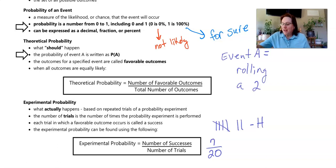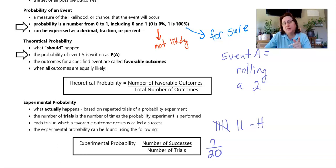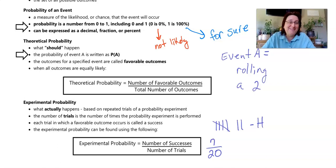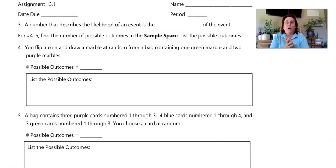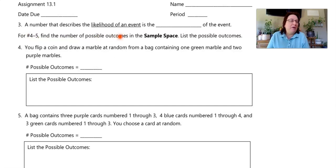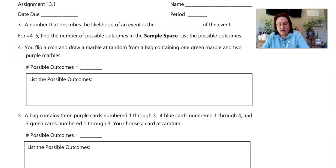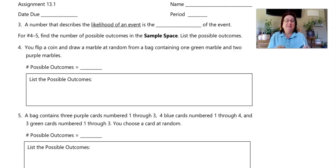Now I'm going to work through some problems with you — I'll do three of them, and then you'll get a better hang of all of this. Let's start with question number four. The instructions say: find the number of possible outcomes in the sample space and list the possible outcomes. Question four says: you flip a coin and draw a marble at random from a bag containing one green marble and two purple marbles.